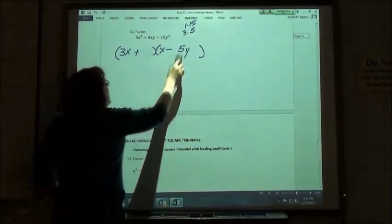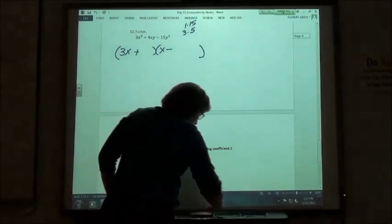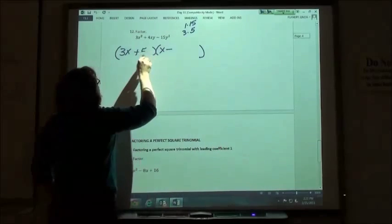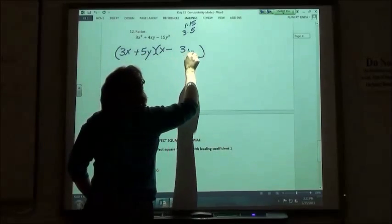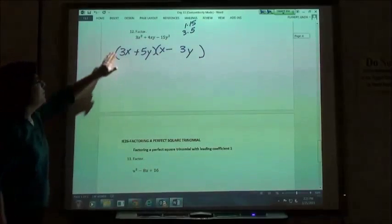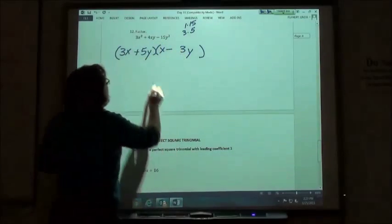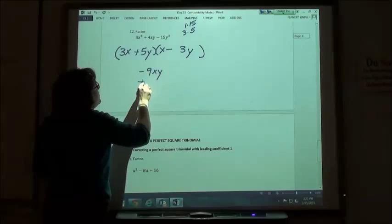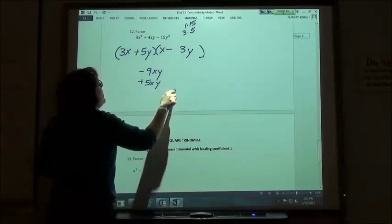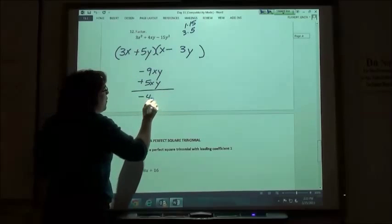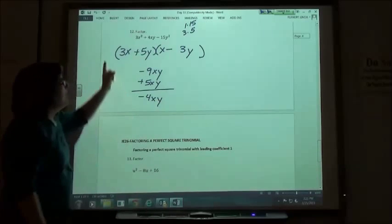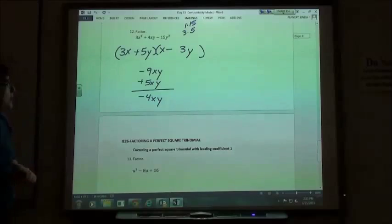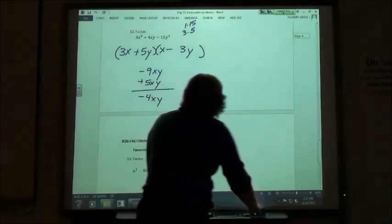So I'm going to put my 5 first and then my 3. So 5y and 3y. 3x times negative 3y is negative 9xy. 5y times x is a positive 5xy. If I add those, I get negative 4xy. Tells me my values are in the right order. I just need to fix my signs.